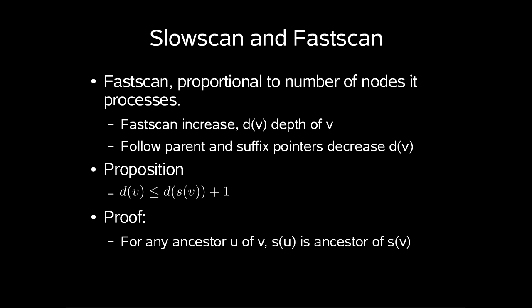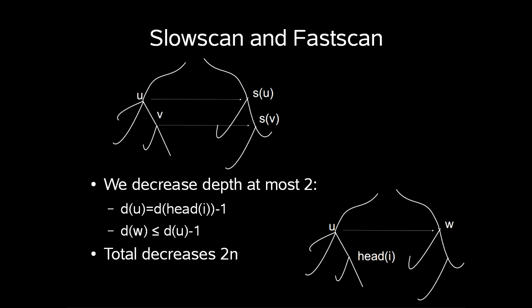So how do we prove this? Well, for any ancestor u of v, suffix link of u is the ancestor of s(v), except for the empty prefix and the single letter prefix of v. The s(u) are different. So at each step before calling a fast scan we decrease the depth by at most 2. The depth of u is the depth of head(i-1). The depth of w is larger than or equal to the depth of u minus 1. So that will leave us with a total decrease of 2n. The time usage of fast scan is order n because the time usage of fast scan is bound by n plus the total decrease of depth.